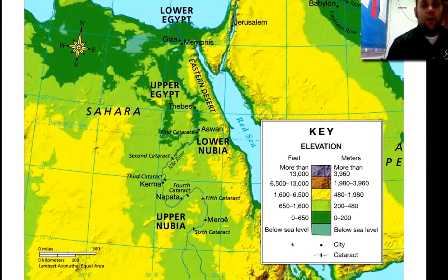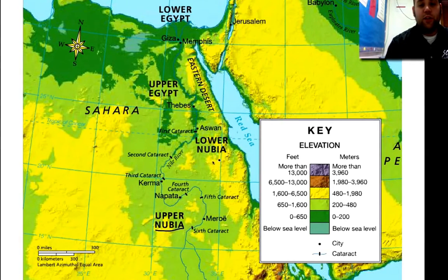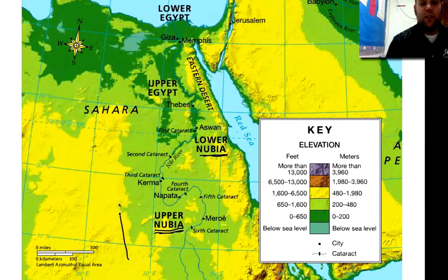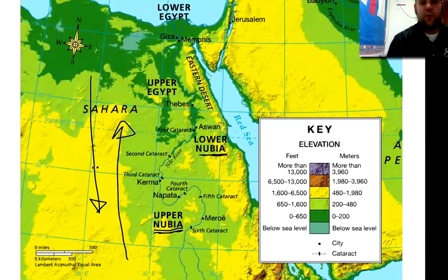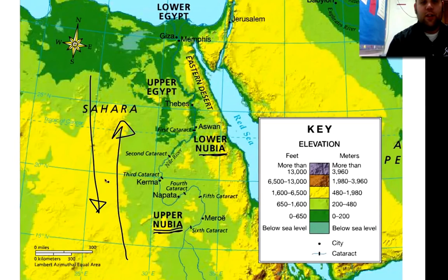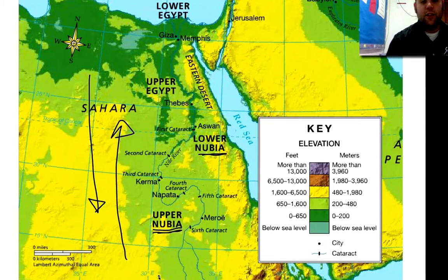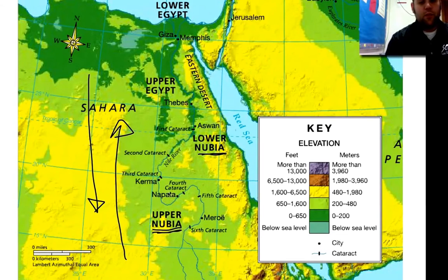Here's our map. So here we see Nubia — lower Nubia and upper Nubia. Upper Nubia is actually below lower Nubia because, again, the Nile flows in this direction — instead of most rivers flowing from north to south, or east to west depending on elevation. Here, higher elevation is down here in the yellow region, somewhere around 1,600 to 6,500 feet. Notice there's more yellow here than further down — so that's important to remember.